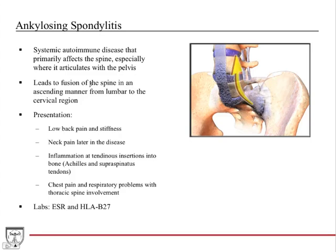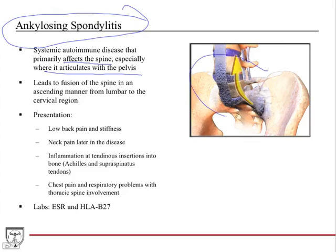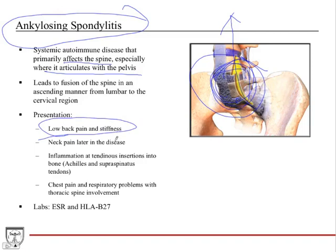Ankylosing spondylitis — this is high yield for Step 1, Step 2, and shelf exams. It's a systemic autoimmune disease that primarily affects the spine. Unlike rheumatoid arthritis, which affects peripheral joints, ankylosing spondylitis is especially where the spine articulates with the pelvis. It leads to fusion of the spine in an ascending manner — starting with the sacroiliac joint and ascending up the spine — causing low back pain and stiffness. In later disease, it causes neck pain and tenderness at tendon insertion points, especially the Achilles and supraspinatus tendons.